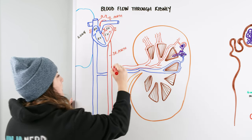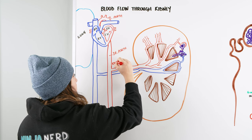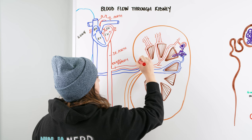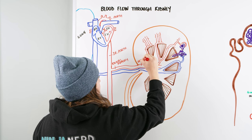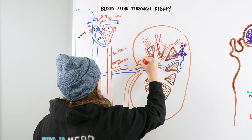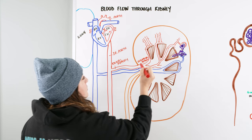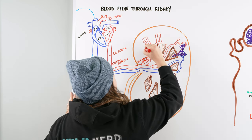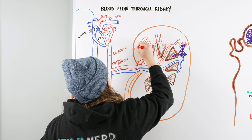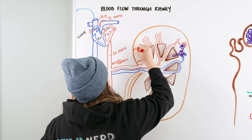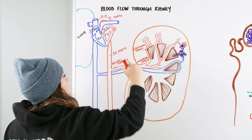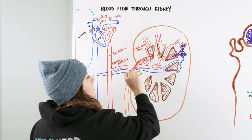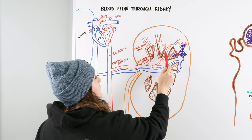From the descending aorta is where we start to enter the kidney. We have our renal artery, which flows into the kidney. As it flows in, we have our segmental artery. The segmental artery breaks off and goes in between the lobes, forming our interlobar artery — so the interlobar artery runs in between the lobes.